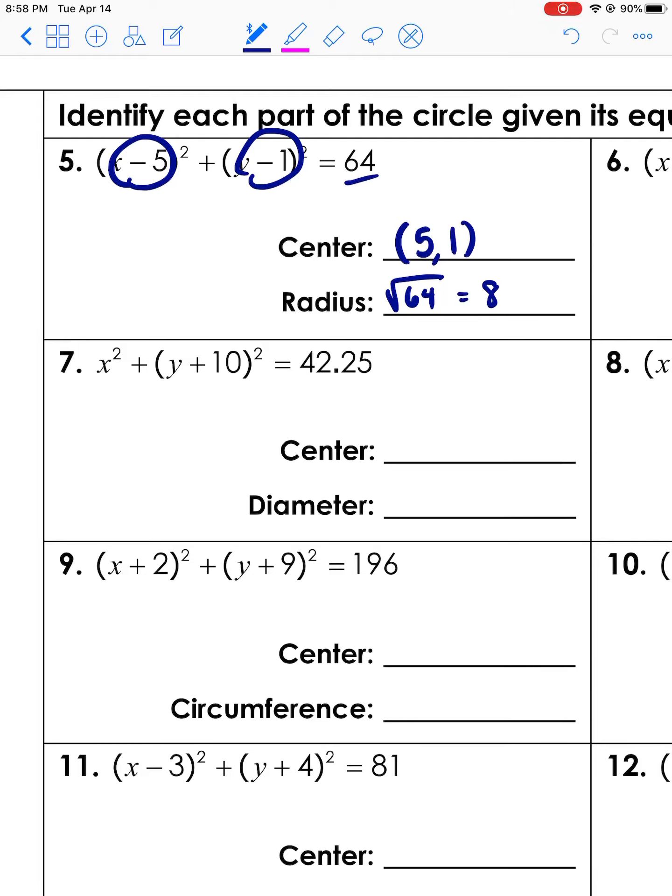Let's try number seven. The center is zero, negative ten, right? Because when there's nothing here it's x minus zero squared, so the h value is zero. The k value is the opposite of what's here, so negative ten. We're asked for diameter, but let's hold off there and first find the radius. Obviously you can't get to the diameter from this - you need to go through the radius first. We need to find the radius, but this isn't a perfect square. That's okay. We're just going to take the square root of it anyways, and the square root of 42.25 is 6.5. It's okay that it's not a perfect square. And from there to get the diameter, we know that the diameter is 2 times the radius, so it's going to be 13.